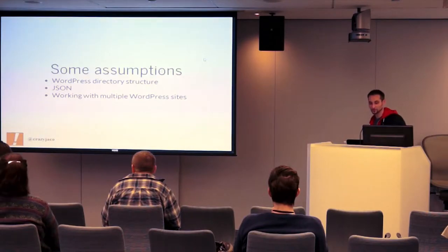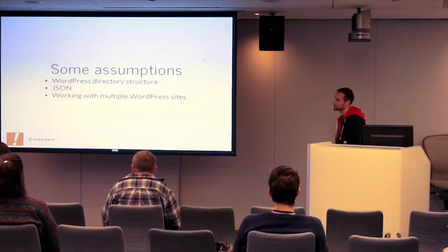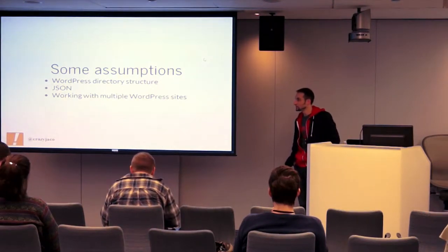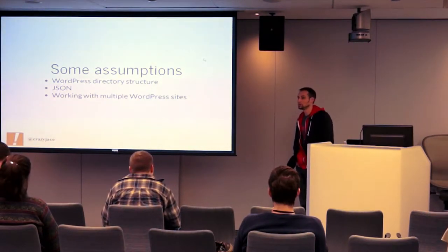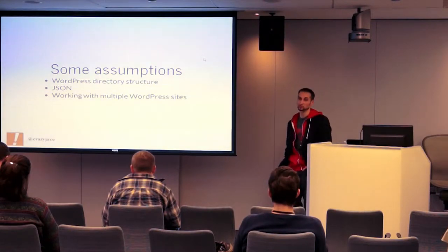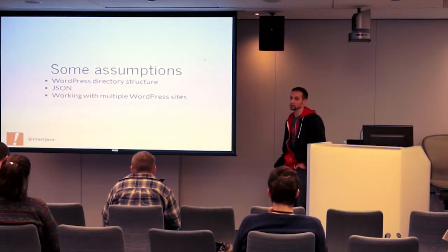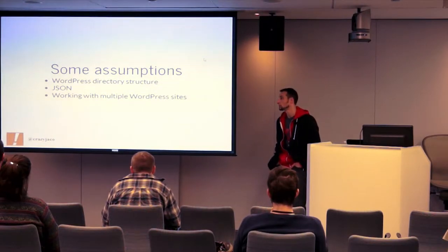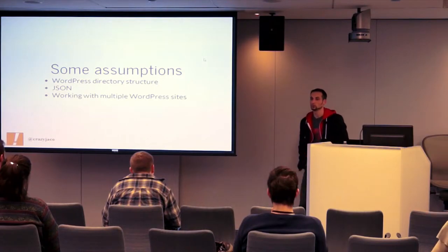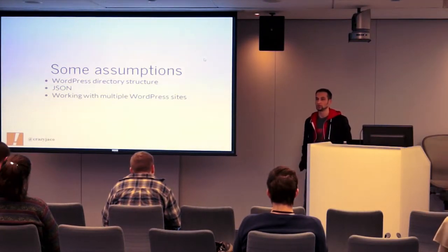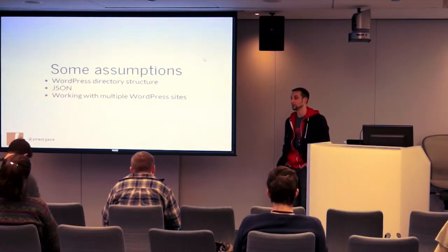This is an advanced talk, so we're going to make some assumptions. We're going to assume that everyone understands the WordPress directory structure. We're also going to assume some knowledge of JSON, which is JavaScript Object Notation. We won't be looking at any code, but we will be looking at some configuration files written in JSON.